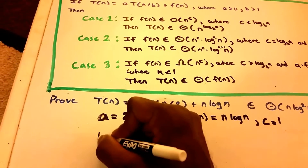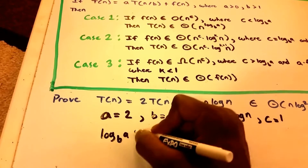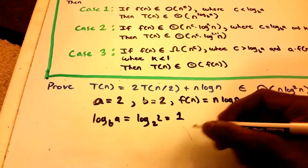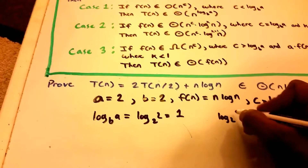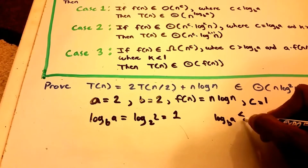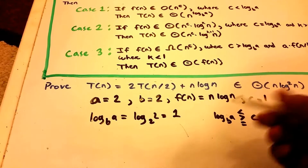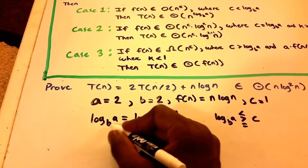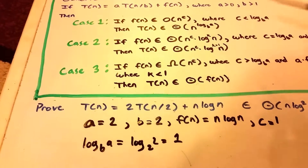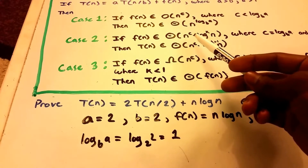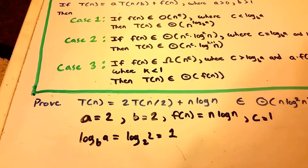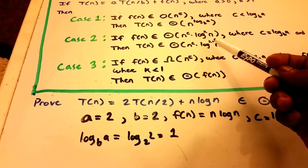Now we need to choose a case. Let's figure out what log base B of A equals: it's log base 2 of 2, which equals 1. We want to see if log base B of A is less than, greater than, or equal to C. We can see they are equal — log base B of A is 1 and C is 1 — so we're going to use Case 2. Case 2 says if F of N belongs to theta of N to the C times log to the K of N, where C equals log base B of A and K is greater than or equal to 0, then T of N belongs to theta of N to the C times log to the power of K plus 1 of N.